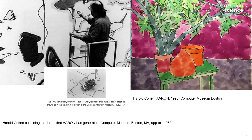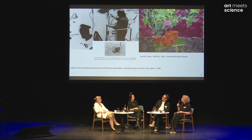You see here an older example where the machine was only working in black and white, and Cohen was coloring himself, and then later examples where the machine was also using color.